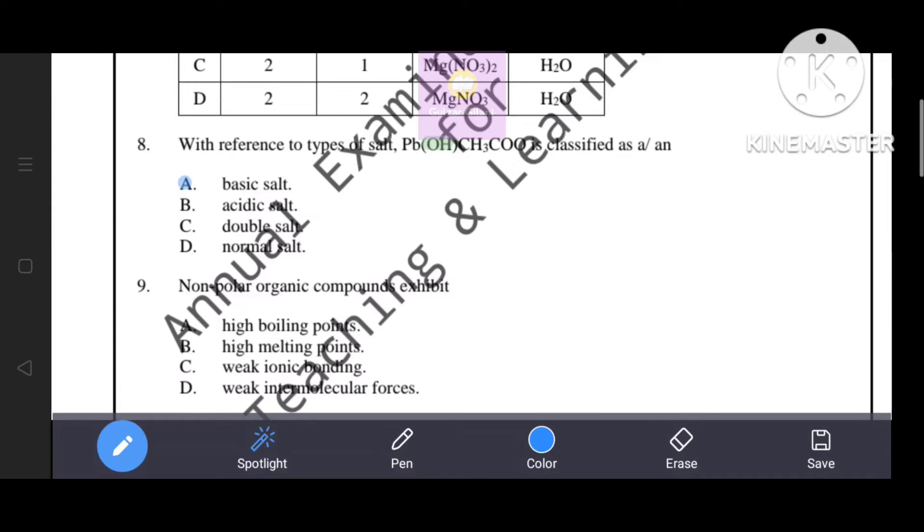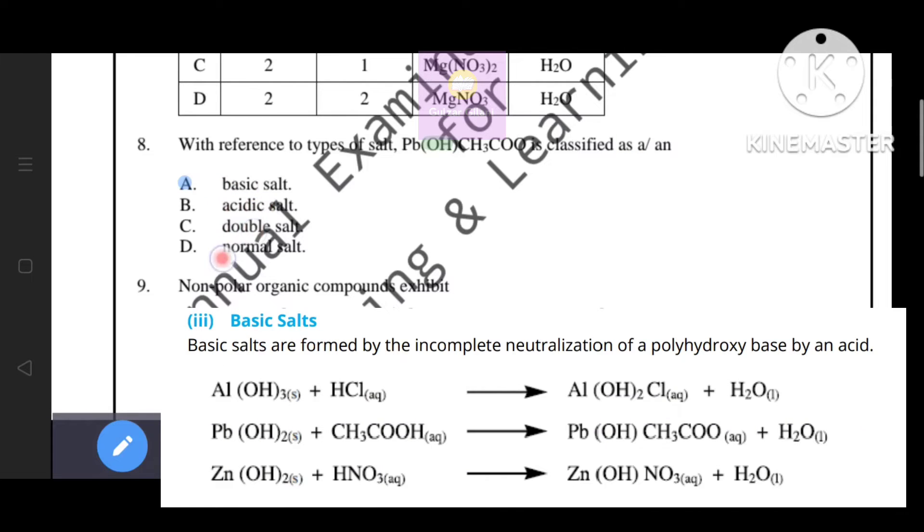Next question. With reference to types of salt, Pb(OH)Cl is classified as... Given options, which is the correct answer? Option A, basic salt is the correct answer. As you know, basic salts are formed by the incomplete neutralization of a polyhydroxy base by an acid. That's why option A, basic salt is the correct answer.